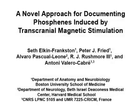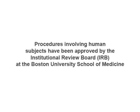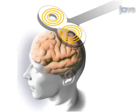This video will demonstrate a standard procedure for obtaining a phosphine threshold value using transcranial magnetic stimulation and a method for mapping and recording the size and location of perceived phosphines.